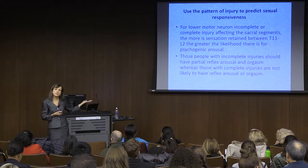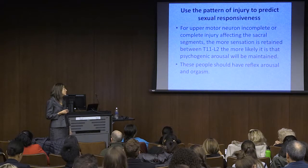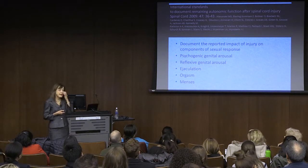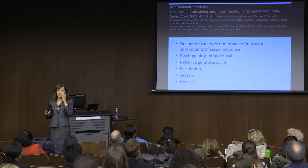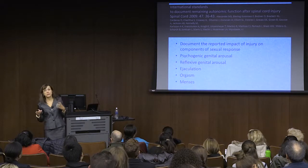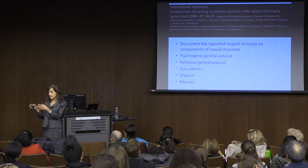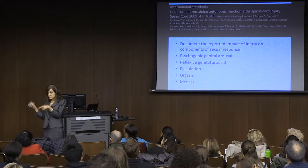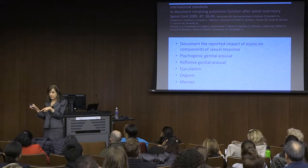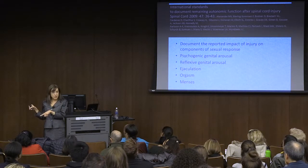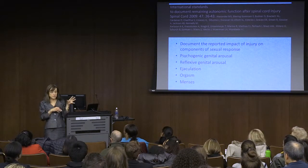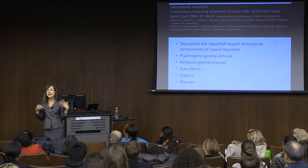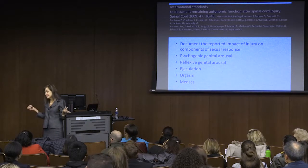So I know what's supposed to happen. If somebody comes to see me, I've got to start figuring out what their potential is. According to what I know, this person should be able to have orgasms—why don't they? Or this person should be able to have lubrication—why don't they? And how do we discuss that?